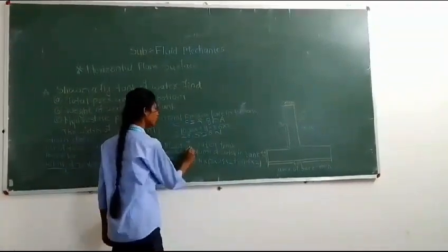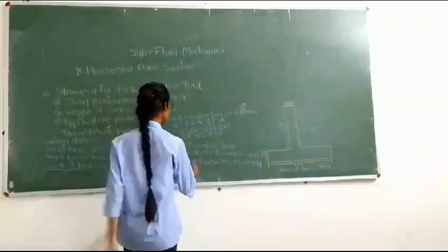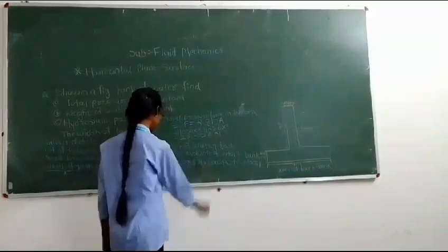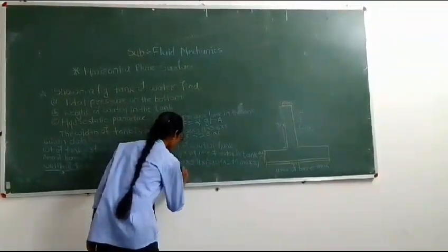The second is weight. Width became 3 meters. Apply this formula, rho g times volume of water in tank.